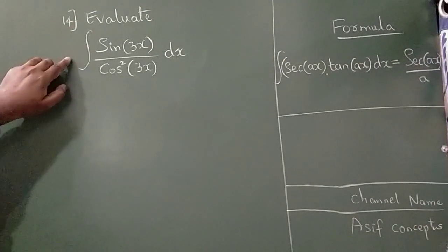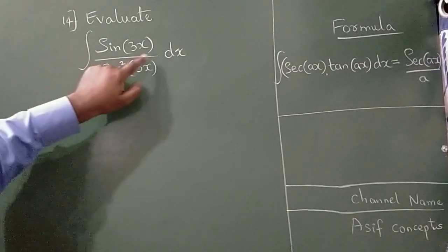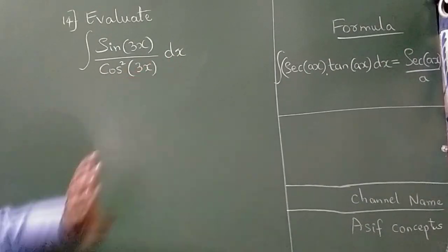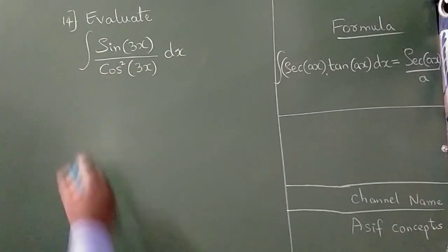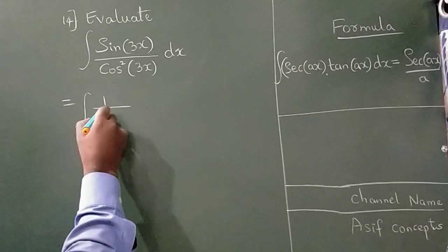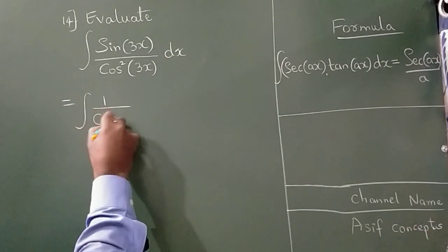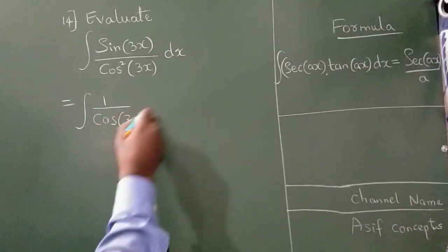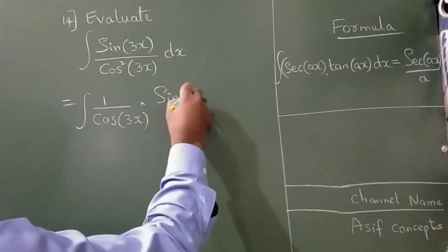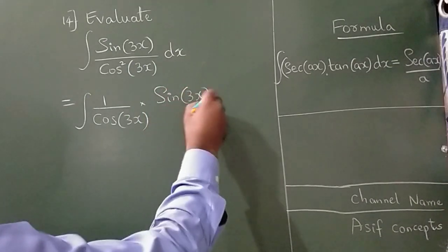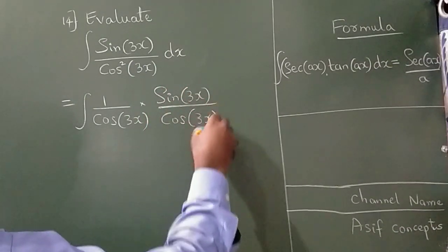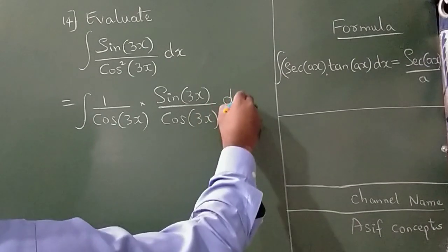Evaluate the integration of sin(3x) divided by cos²(3x) dx. I am going to write this separately as sin(3x) upon cos(3x) into (1/cos(3x)) dx.